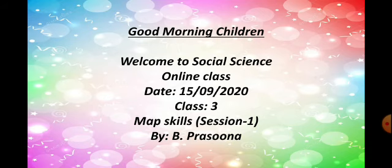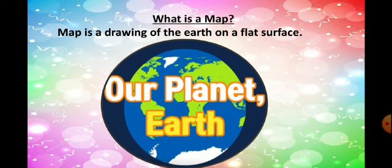First let us know what is a map. A map is a drawing of the earth on a flat surface. You all know that earth is the planet on which we all are living. So all the places we have on the earth we are going to show on a flat surface, meaning on an A4 sheet.